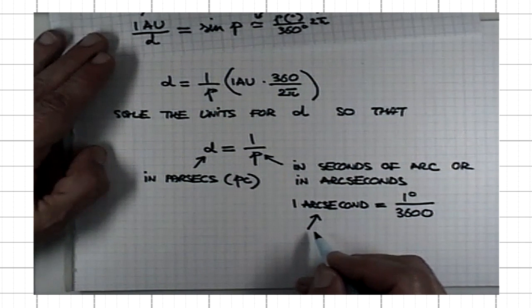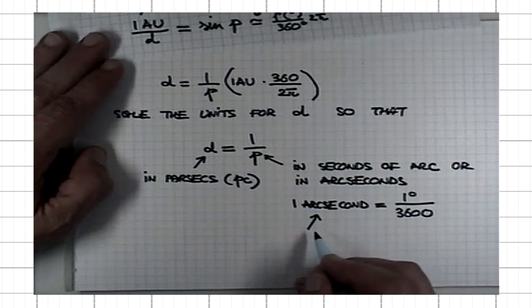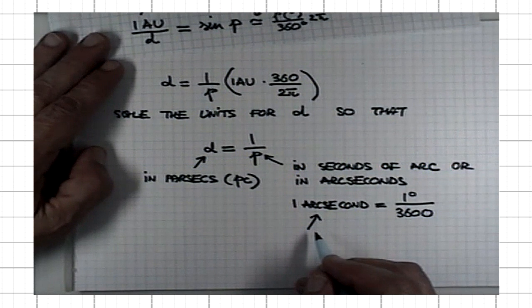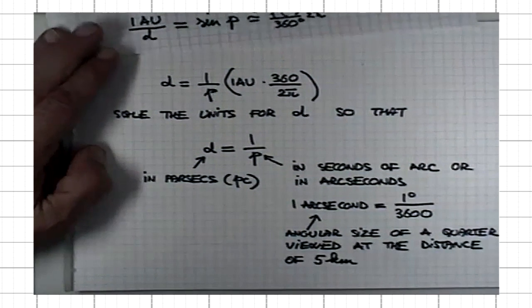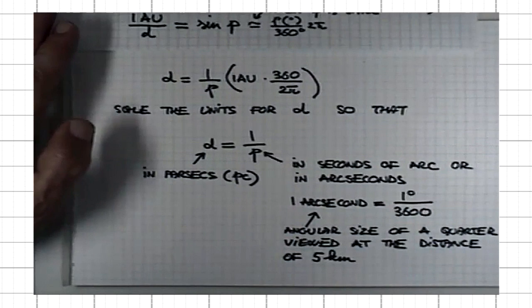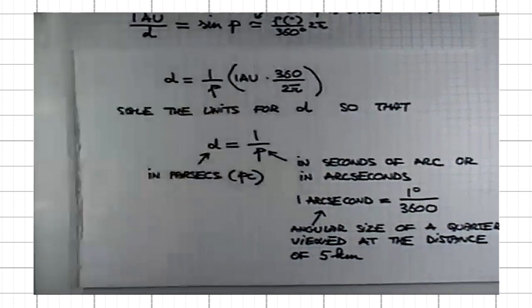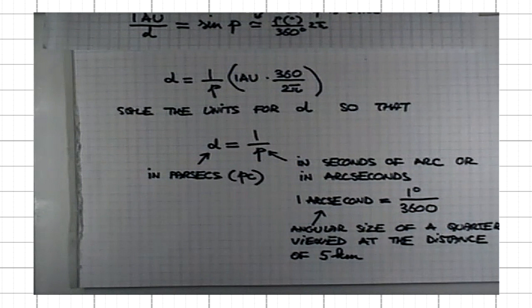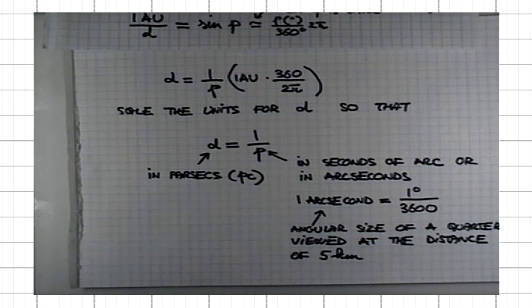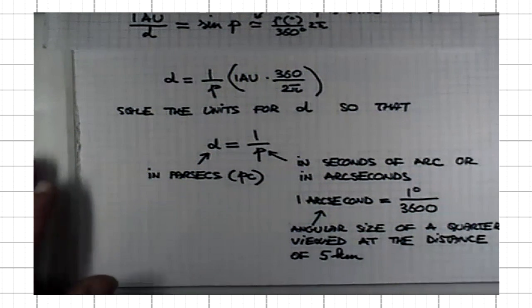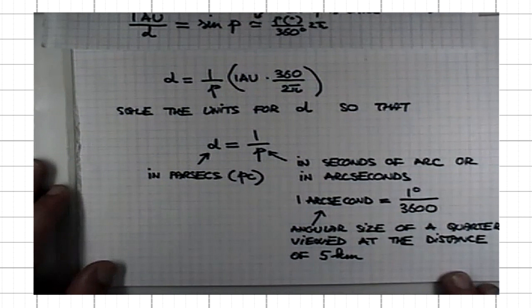That would be an angle at which one would view a quarter from a distance of 5 kilometers. Even for the nearby stars, a parallax angle is less than one second of arc. It's about three-quarters of that. Not surprising that the parallax angles could not be measured until powerful enough telescopes were developed. For the first time, the parallax angle of stars was measured in 1838.